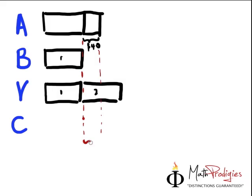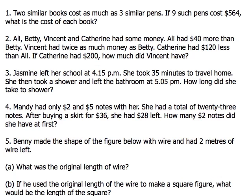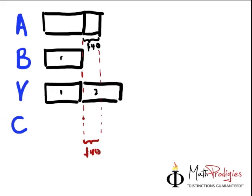If Ali has this much and Catherine has $120 less, this is already $40. From here to here is already $40. Catherine is $120 less, so is $40 enough? No. How much more do we need to minus? You take $120 minus $40 and you get $80.